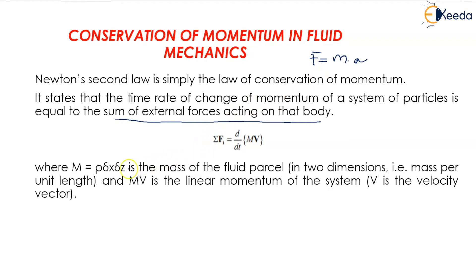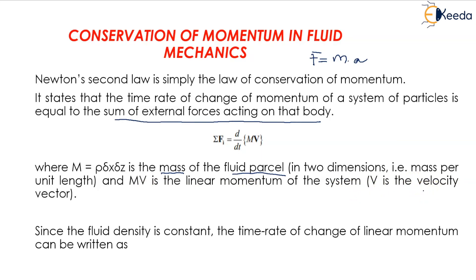Here m = ρ·Δx·Δz is the mass of the fluid parcel in two dimensions, that is mass per unit length, and mv is the linear momentum of the system where v is the velocity vector. Since the fluid density is constant, the time rate of change of linear momentum can be written as d/dt(mv) = ρ·Δx·Δz·(dv/dt).